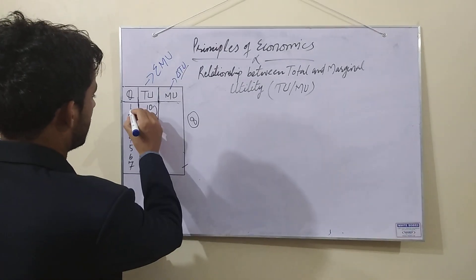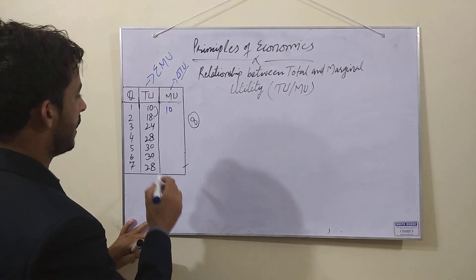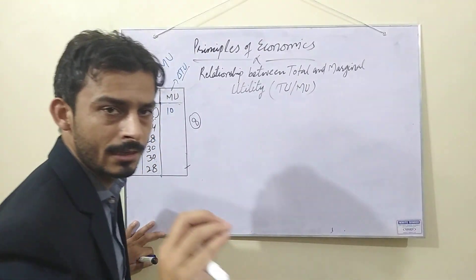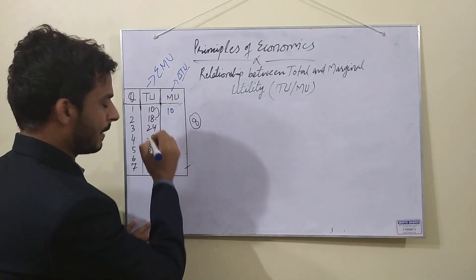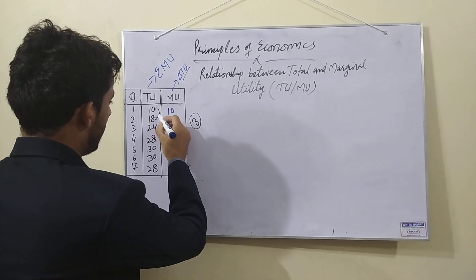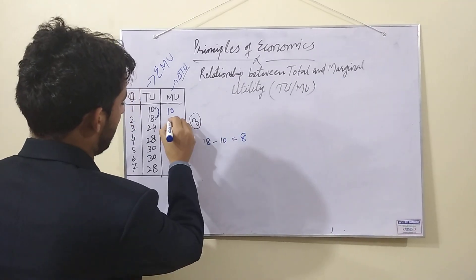Now, let's calculate this. For example, we have quantity 1 and 10. We will keep the same. Marginal utility is the easiest way to calculate. This is quite easy. The next value, we will minus the previous value. For example, I have 18 minus 10. So, I have 8.